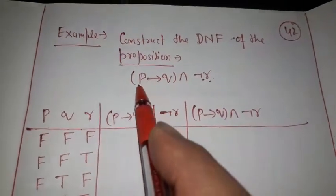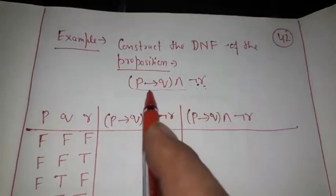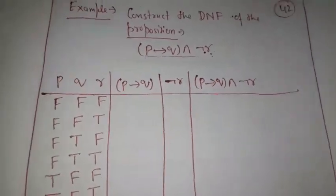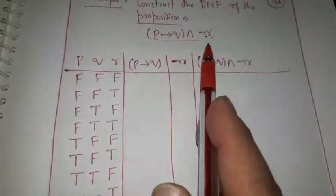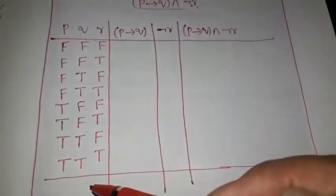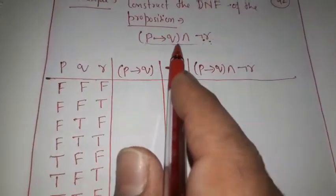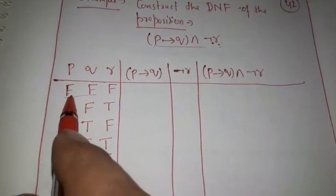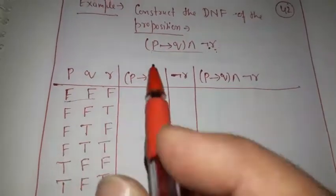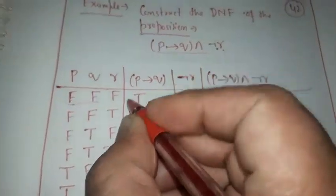Let us construct the DNF of the proposition p→(q∧¬r). To find the DNF, we first draw the truth table. For three variables there are 8 combinations. We simplify left to right: first compute p→q — remember, implication is false only when the first variable is true and the second is false, otherwise always true.